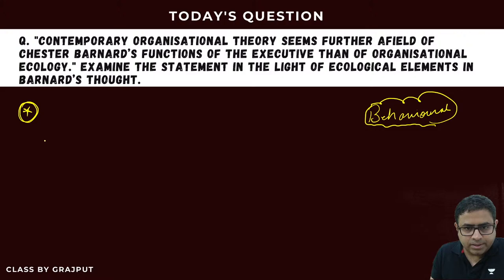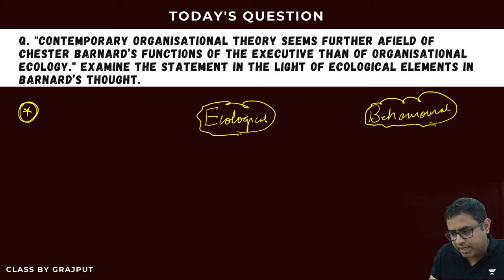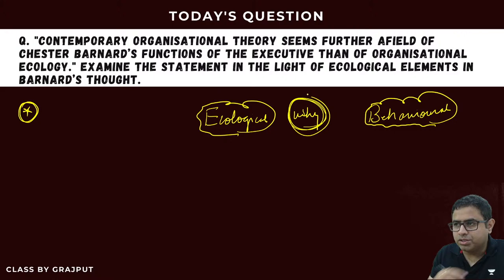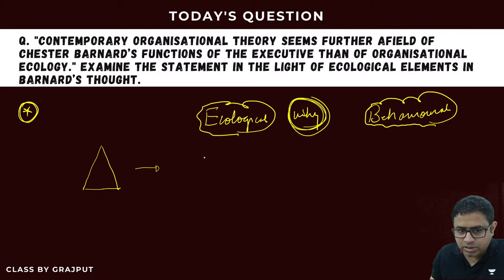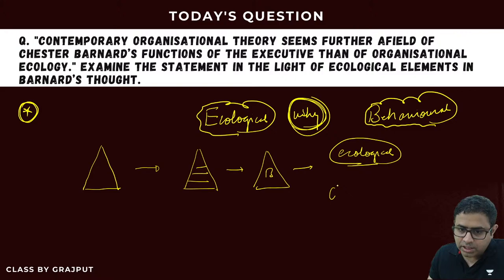We need to examine Chester Bernard's work through the lens of ecological elements. To understand why his theory is ecological, consider the evolution of organization theory: we first understood organizations from a closed perspective, then we introduced the human element, then the behavioural element, and now we understand the ecological element in detail.